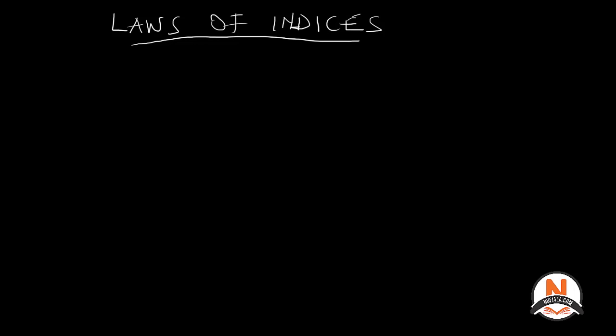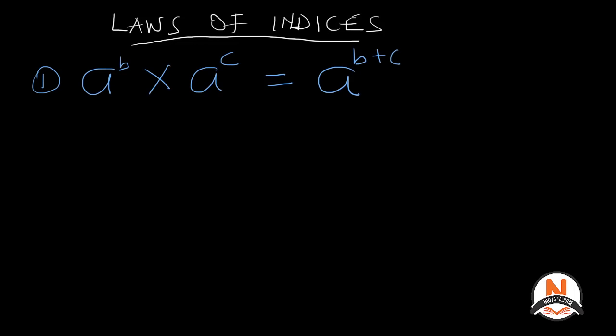In this video we'll talk about three laws. The first law is: if we have any number with a power, and another number with another power, and these numbers have the same base, and they are being multiplied together, this law tells us that we can simply add the exponents. If you are multiplying two numbers with exponents and the bases are the same, we just add the exponents.